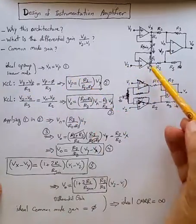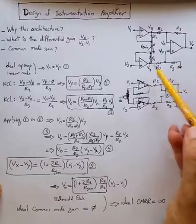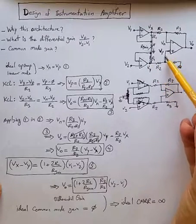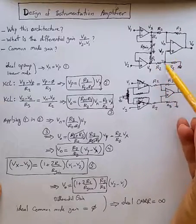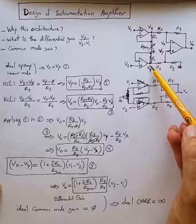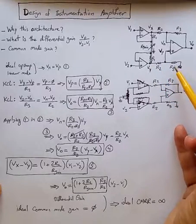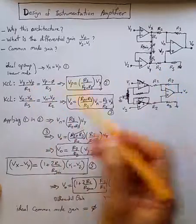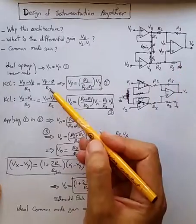Then from KCL, written for Vy, which is the voltage at this point, and Vp and zero, we know there is no current flowing to input terminals of ideal op-amp. And so because of that property, we can write down the current flowing to R2 is the same current flowing to R3. And that's the source of this KCL.